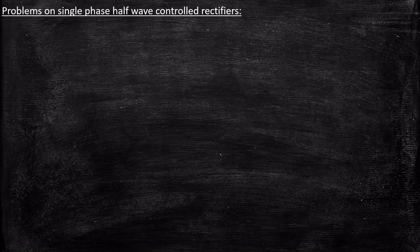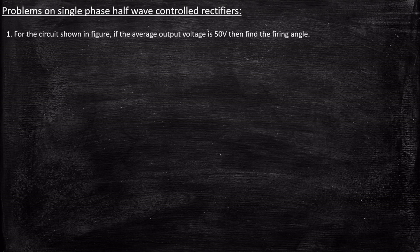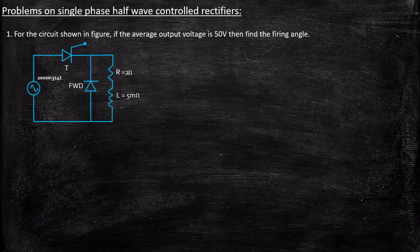In today's video we're going to take a look at problems on single-phase half wave controlled rectifiers. The first problem: for the circuit shown, if the average output voltage is 50 volts, find the firing angle. The circuit is in RL plus freewheeling diode configuration, and we've seen the complete analysis for this in the previous case. Now they're asking us to find the firing angle alpha.